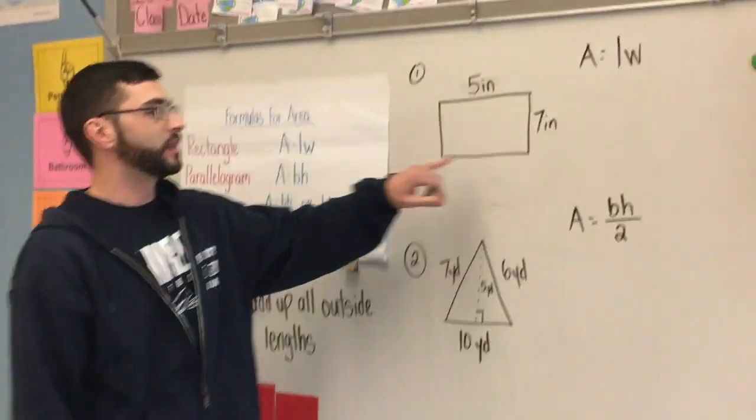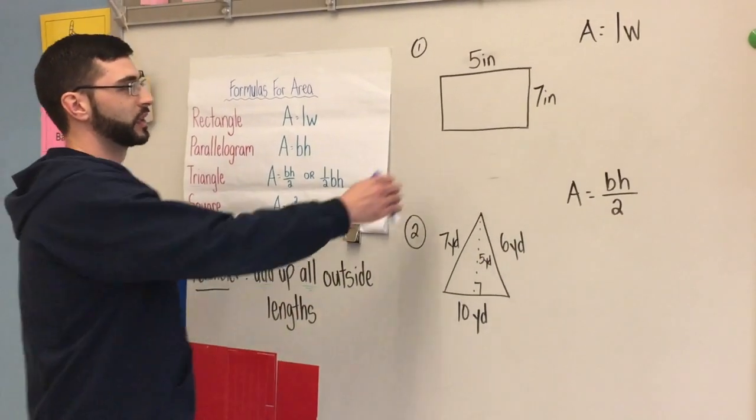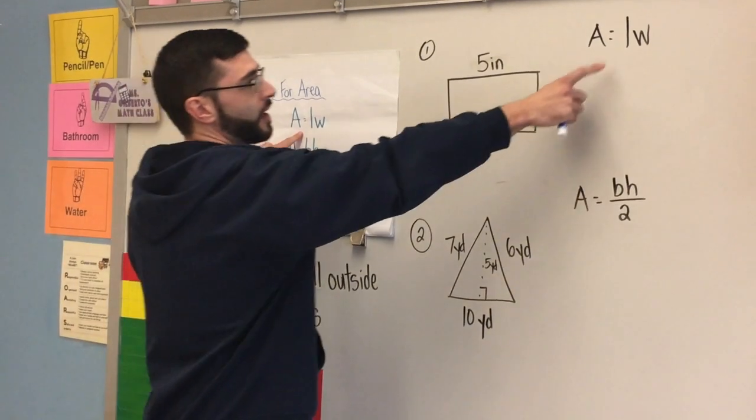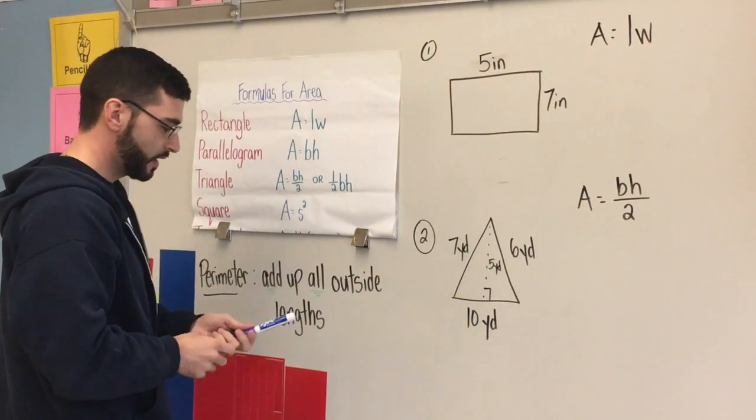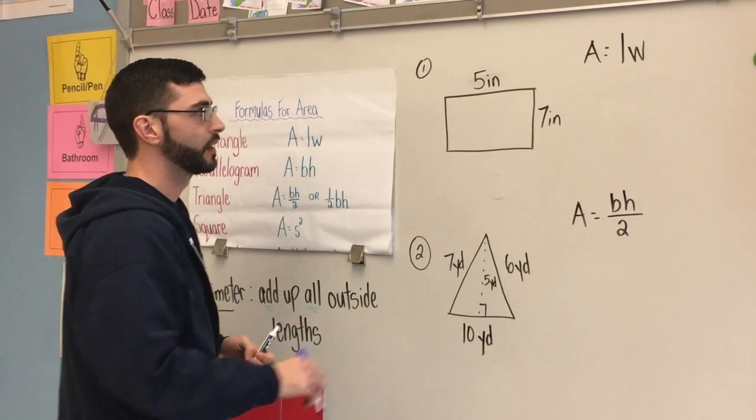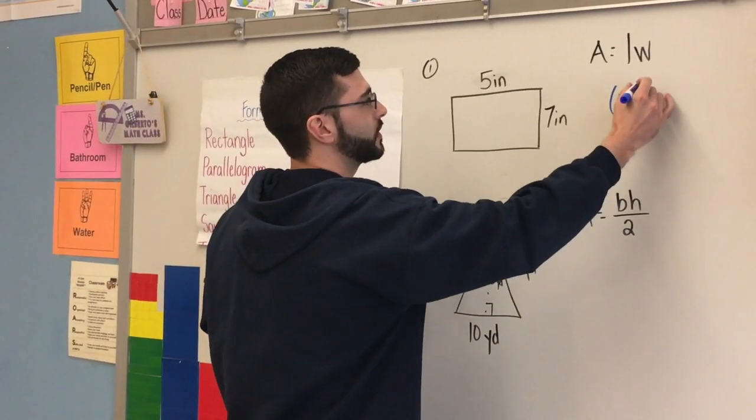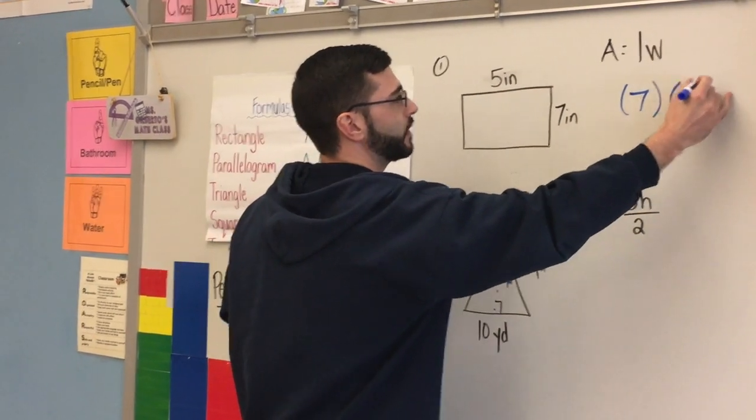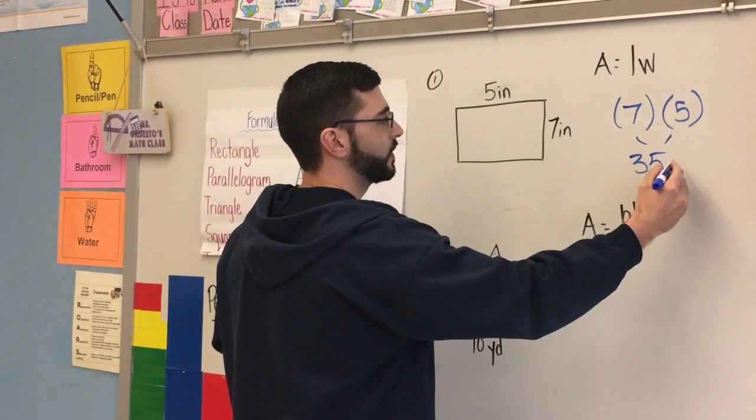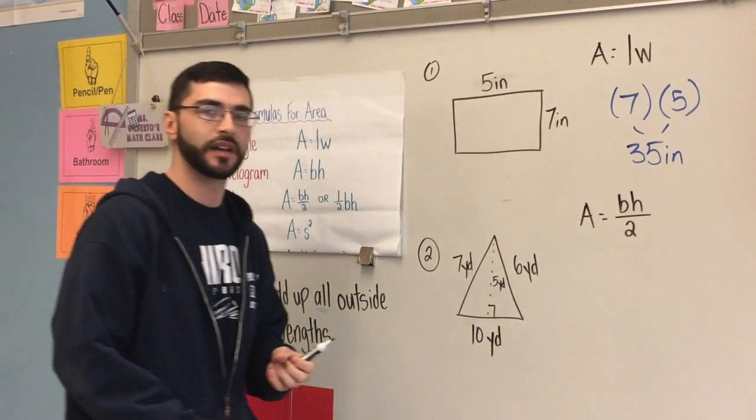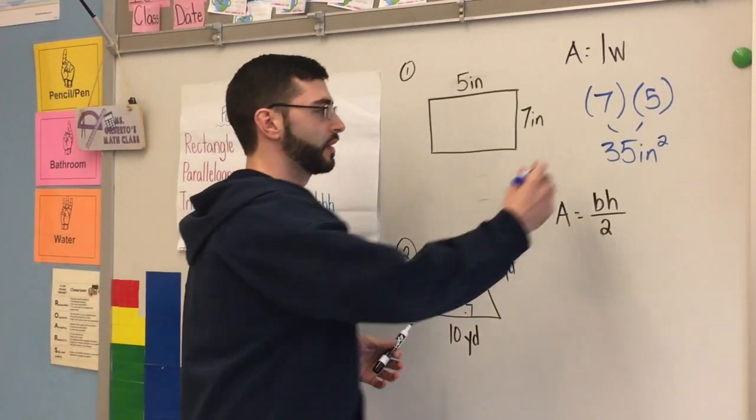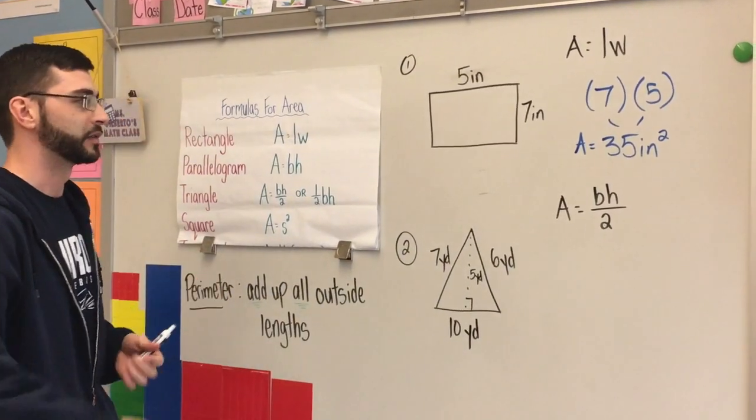So you're going to start getting questions after our formulas. This is the first one. First thing you have to do is identify the shape. That's my rectangle. Area equals length times width. To solve it, we just have to use our substitution. My length is going to be seven. My width is going to be five. So my area, once I multiply, seven times five, that'll give me 35. But in order to have it 100% correct, whenever we solve for area, our units have to be squared. So our final answer is 35 inches squared.